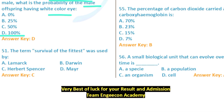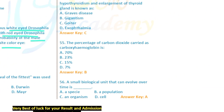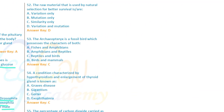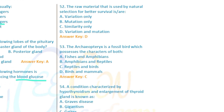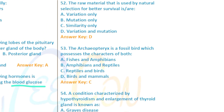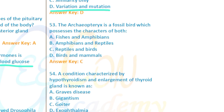Question 51: The term 'survival of the fittest' was used by Herbert Spencer. Question 52: The raw material used by natural selection for better survival are variation and mutation — these are the sources of variation ticked.